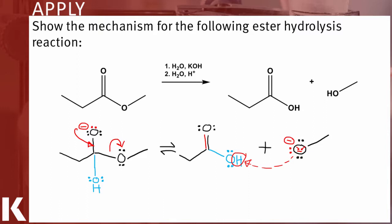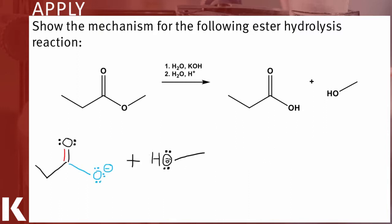So the reaction isn't quite finished. At the end of the first step, you've added a hydroxyl group to the carbonyl carbon, creating a carboxylic acid. And you eliminated a methoxide ion. But the methoxide satisfies its need for protons by stealing a hydrogen off our acid.